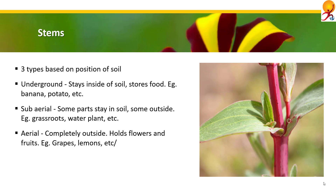Aerial stems are completely confined and localized in air, entirely outside of the soil. In this type of stem, branches, leaves, nodes, internodes, buds, flowers, fruits, etc. are found. Examples: grapes, lemon, roses, etc.